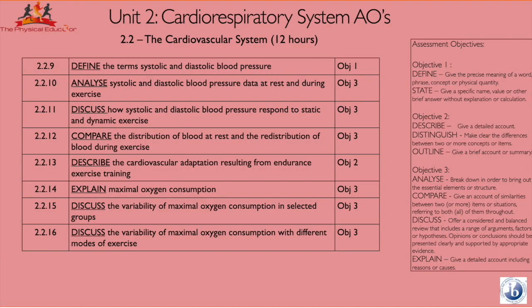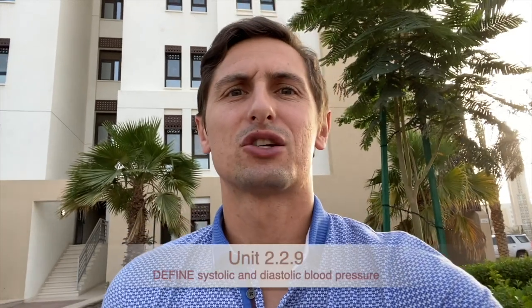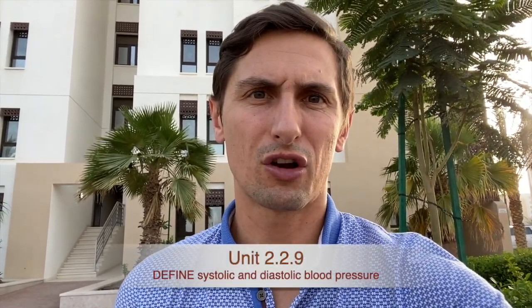Hi everyone, welcome back to the Physical Educator. Today we're going to talk about the CV system part two. We're going to start with the objectives for 2.2.9 to 2.2.16. There's only one objective one and one objective two, meaning for every other specification point you need a discussion, an explanation or an analysis — a lot more information required, more than likely going to be three, four, five mark questions.